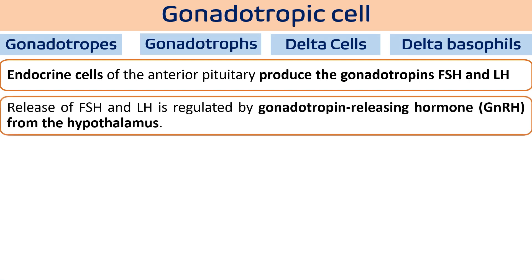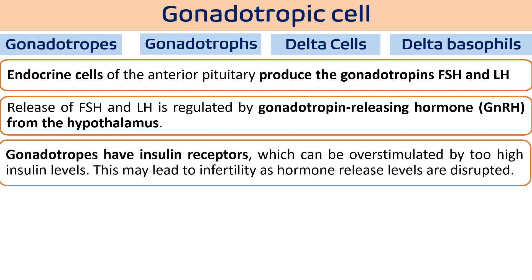FSH and LH are under the regulation of the hypothalamic hormone gonadotropin releasing hormone (GnRH). GnRH is released from the hypothalamus, works on pituitary gonadotrops, and stimulates them to release FSH and LH. One important feature of gonadotropic cells is they have insulin receptors, meaning they can be over-stimulated by high amounts of insulin, leading to elevated FSH and LH levels.